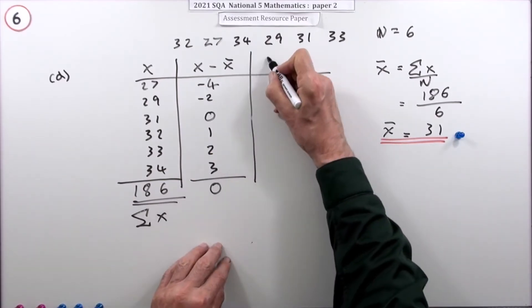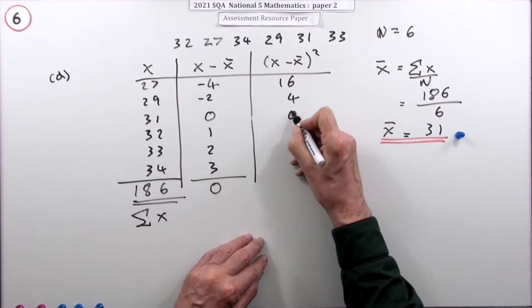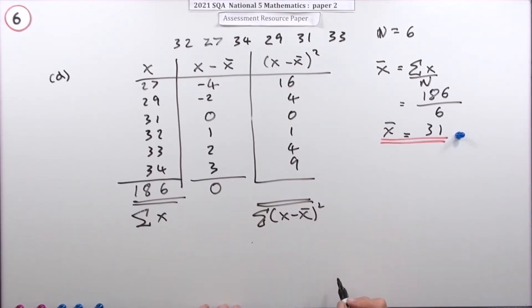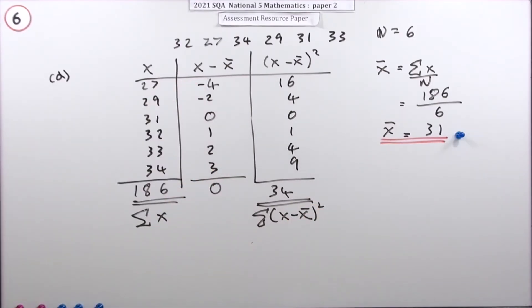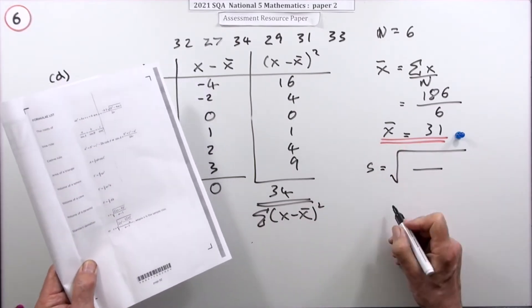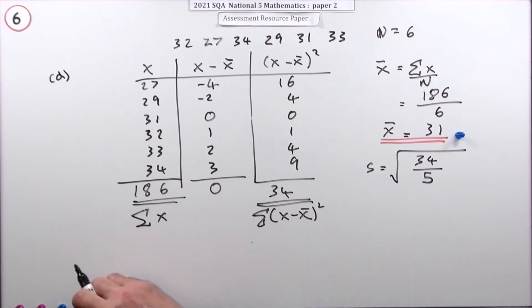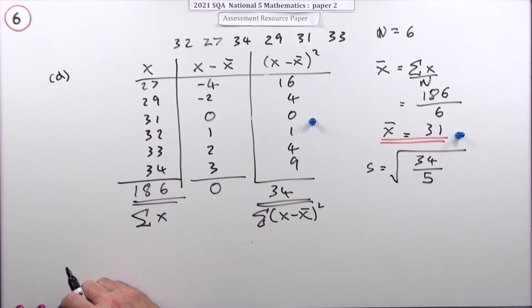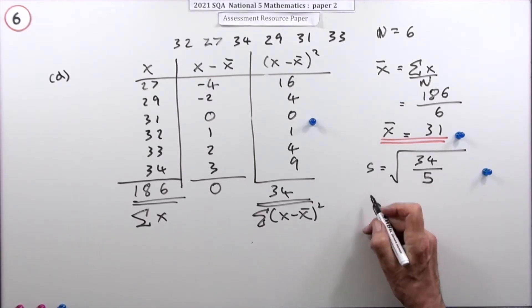With the check confirmed, square each deviation - you don't need a calculator: 16, 4, 0, 1, 4, 9. The sum of the squared deviations is 34. Then write down the formula: the standard deviation is the square root of the sum of squared deviations divided by n minus 1, so it's the square root of 34 over 5. There was one mark for getting the squared values, one for writing the formula with the correct figures, and the final mark for calculating the answer.